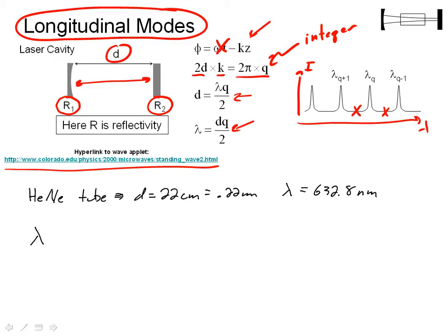And in this case, I know that lambda is equal to d q over 2. And I can go ahead and solve this for q, and when I put in my value of d and my value of lambda, I find that q is equal to 695,322. And this actually corresponds to a wavelength of 632.8003 nanometers. If I increment and say q is equal to 695,323, then I find that the wavelength is 632.7994 nanometers.